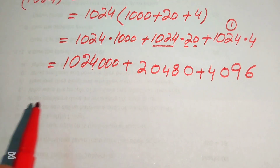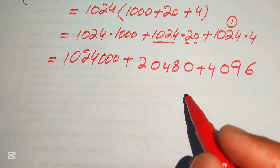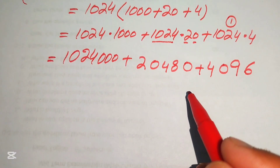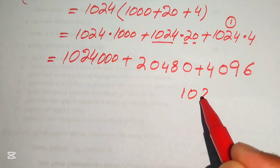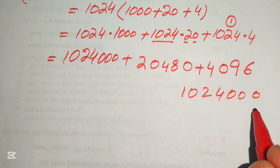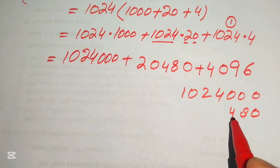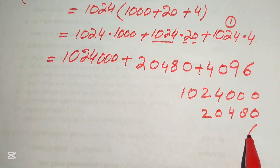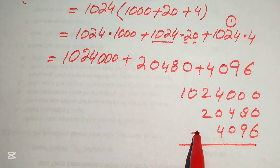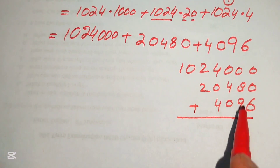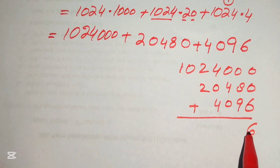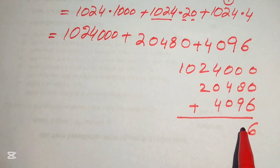In the next step we sum up all these values using the traditional addition method. We have: first value 1024000, second value 20480, third value 4096. Adding: we start from the right — 0, then 9 plus 8 is 17, write 7 carry 1.